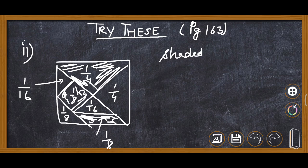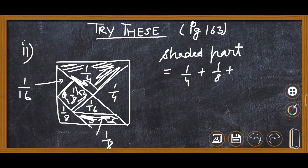So we will take 1 upon 4 plus 1 upon 8 plus 1 upon 8. You can see: 1 upon 4 is this part, 1 upon 8 is this part, and 1 upon 8 is this part.